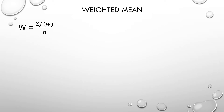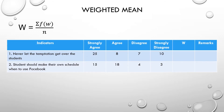We will use weighted mean with two indicators. Indicator one: never let the temptation get over the students. Indicator two: students should make their own schedule on when to use Facebook. There are 40 respondents. For indicator one: 25 strongly agree, 8 agree, 7 disagree, 10 strongly disagree. For indicator two: 15 strongly agree, 18 agree, 4 disagree, 3 strongly disagree.